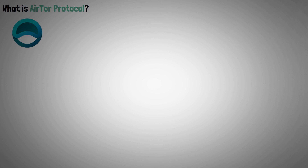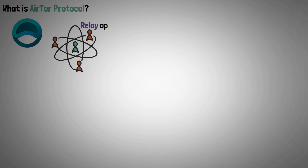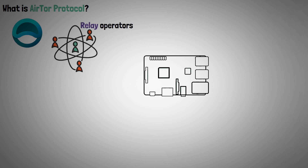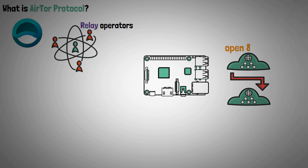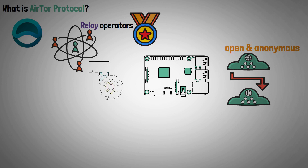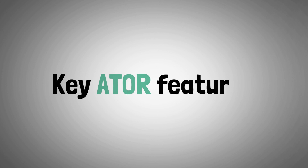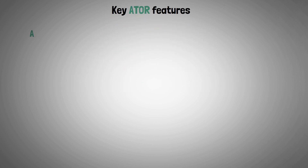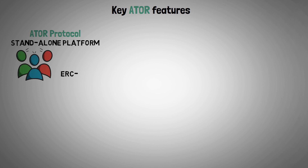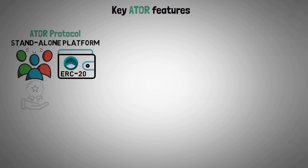Airtor Protocol is a decentralized internet based on relay operators. Through its specialized hardware, the system facilitates the wider distribution of open and anonymous protocols while rewarding operators for their contributions to the blockchain. Four key features make Airtor unique: a standalone platform that enables users with an ERC-20 wallet to use the native Airtor token, with rewards paid out based on useful activity.